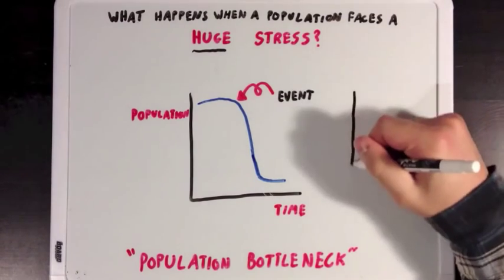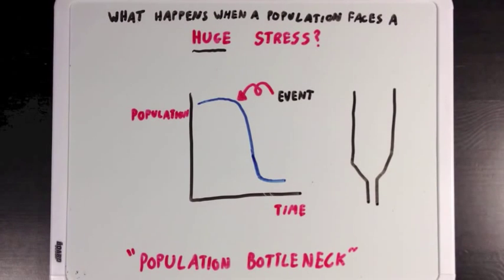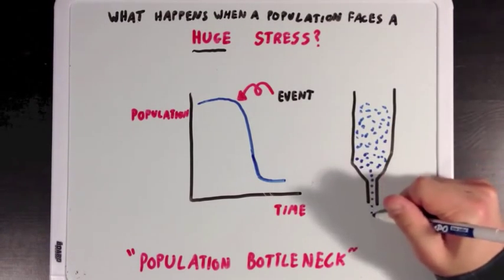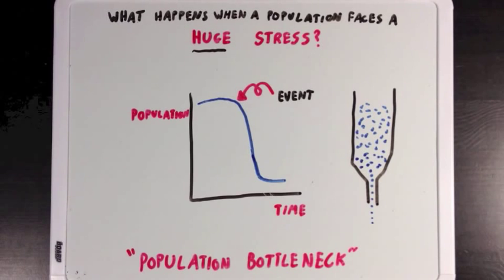And we use the word bottleneck because we imagine that we have this bottle, and all of these blue beads inside will represent different people in the population. And because the neck of the bottle is so narrow, only a couple of beads will make their way out, just like an environmental stress that's significant will only let a few people survive.